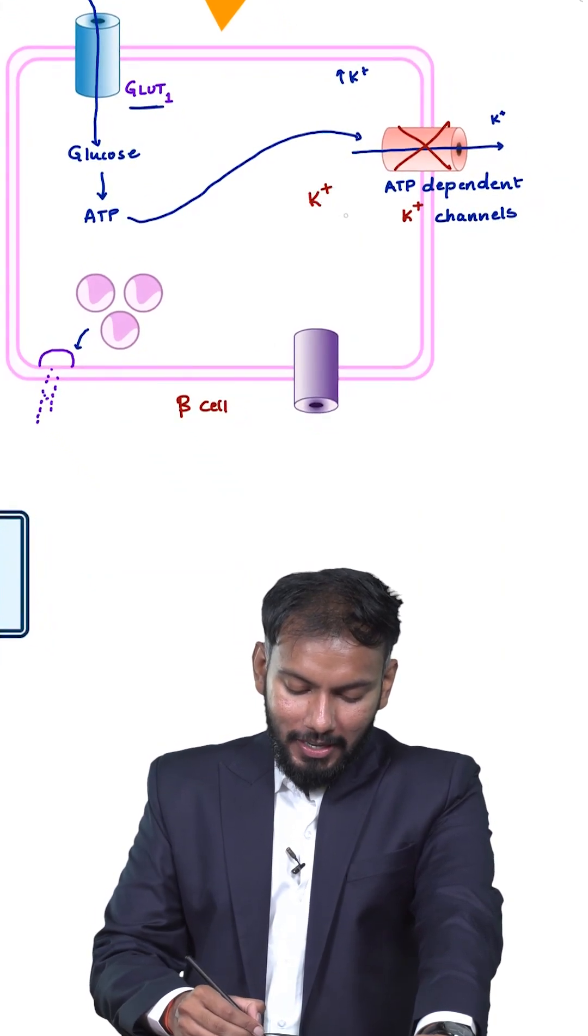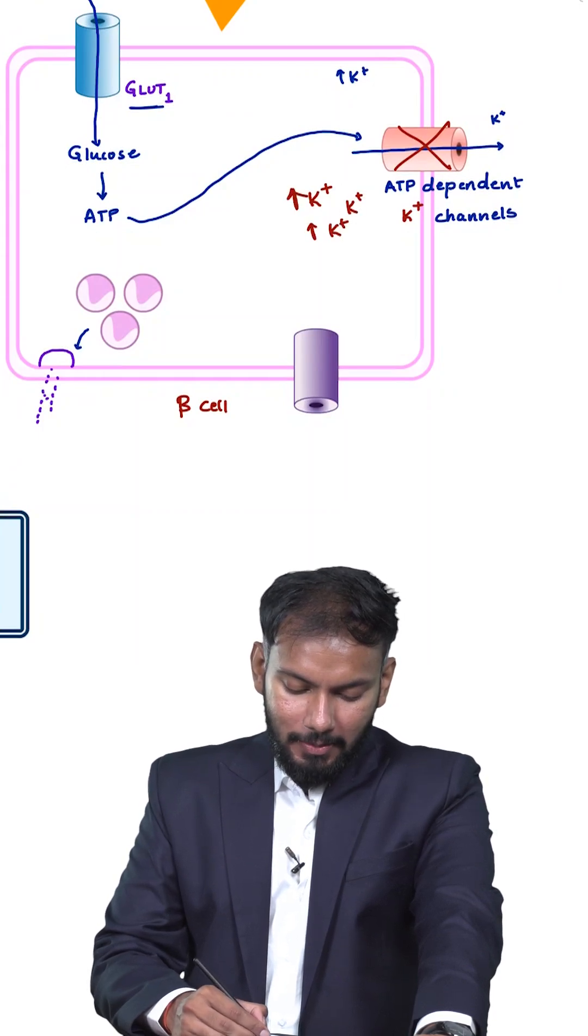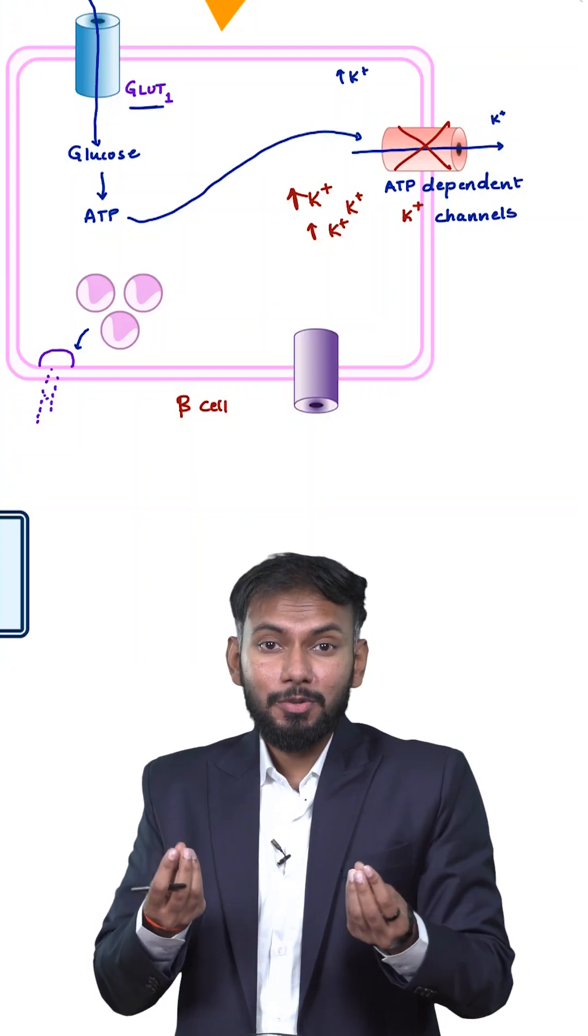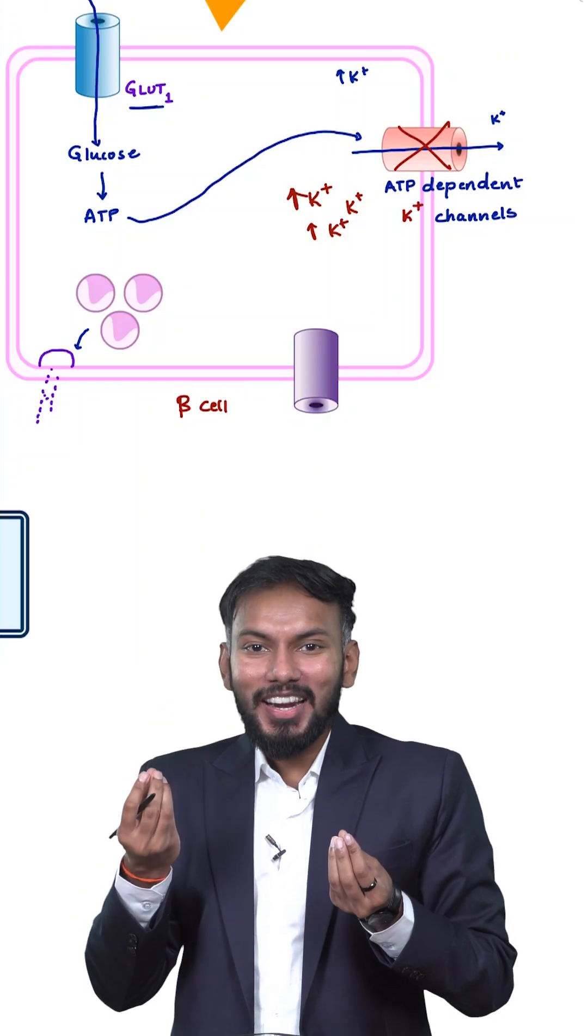The potassium will not go outside. So the potassium inside the cell will increase. Potassium is positive, so positive charges inside the cells will increase. This will cause depolarization.